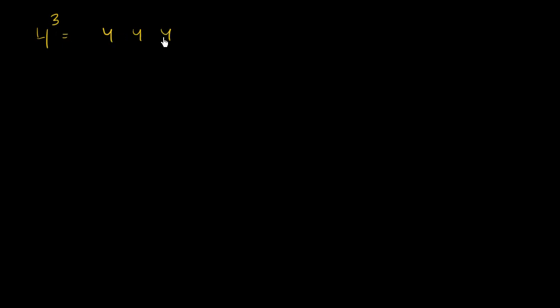We already know a good bit about exponents. For example, if we took the number 4 and raised it to the third power, this is equivalent to taking three 4s and multiplying them. Or you could also view it as starting with a 1 and then multiplying by 4 three times. Either way, this results in 4 times 4 is 16, times 4 is 64.